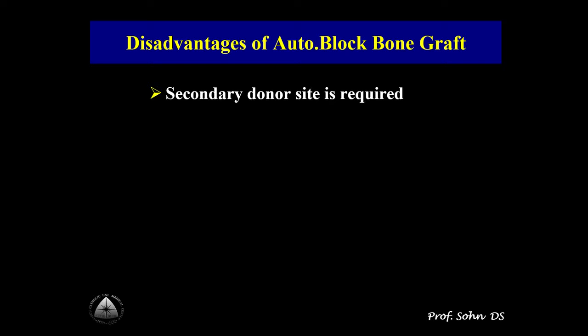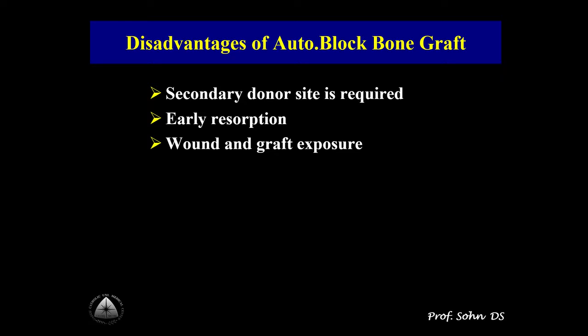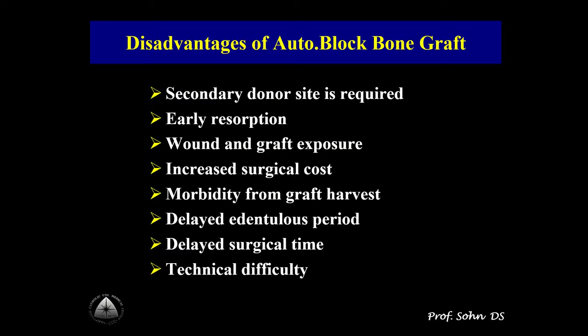The use of autologous block bone graft is considered the gold standard for vertical bone augmentation due to its osteoinductive and osteoconductive capacity. However, there are many problems associated with harvesting an adequate quantity of autologous bone graft. Harvesting requires secondary surgery, causing increased surgical time and cost, fracture of donor site, and neurosensory disturbance. This technique is also technically difficult.